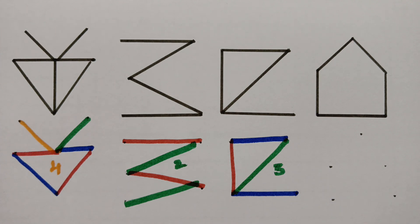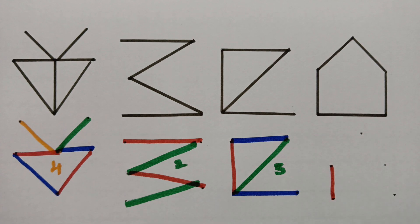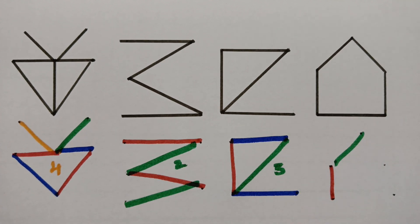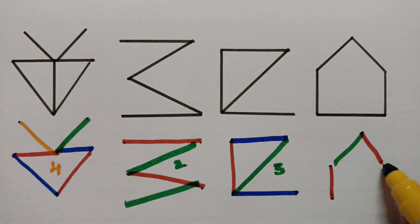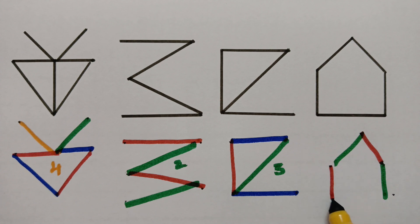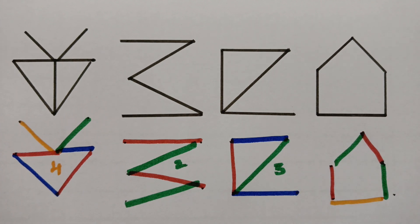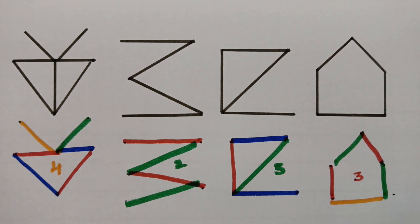For the next graph, starting with red, I use green for adjacent edges, then red again, then green. For another edge, green would be adjacent to green and red to red, so I have to select a different color — yellow. Therefore the chromatic number for this graph is 3, using 3 colors total.